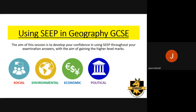So just a quick recap of what SEEP means. We are looking at Social impacts, Environmental impacts, Economic impacts and Political impacts. Social impacts is all about people and things that affect people. Environmental impacts are all about landscape, nature and the environment. Economic impacts are all about jobs and wealth, and political impacts are all about government and policy and decision-making.